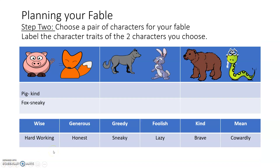Today we are going to think about planning our fable. We are going to choose a pair of characters, and I have six characters that are a pair that you can choose from. You're going to label the character traits of the two characters you choose. I have some descriptive language down at the bottom that's going to be helpful when describing your characters. I chose the fox and the pig — the pig is kind and the fox is sneaky. There are describing words below that might describe your characters and how you want them to be portrayed in your fable.